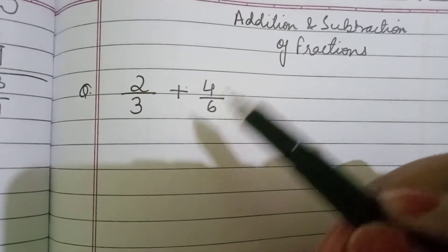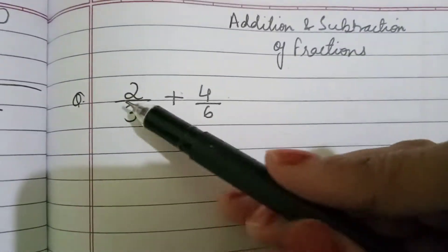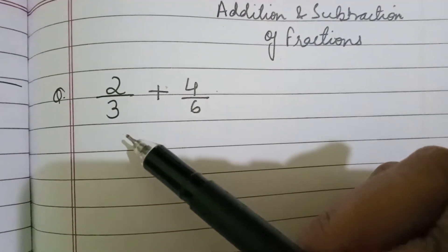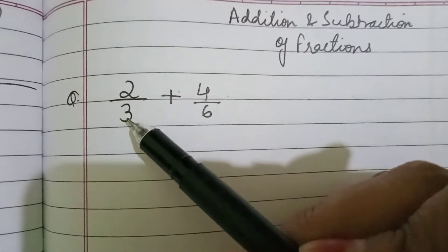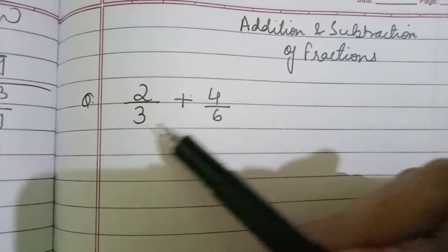Children, always remember when you have to add or subtract or compare any two fractions. This is fraction number 1 and this is fraction number 2. What do you have to see? That the denominator. What is denominator? Denominator is the number which is written below the line.